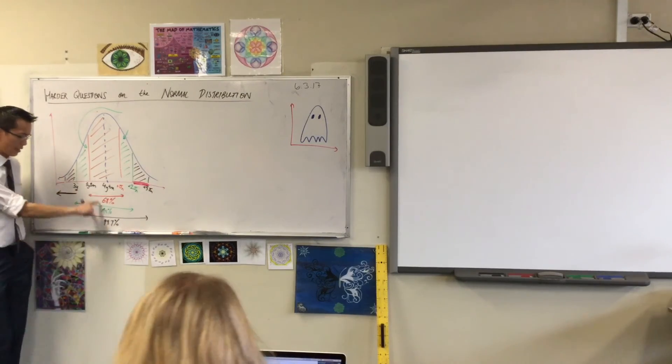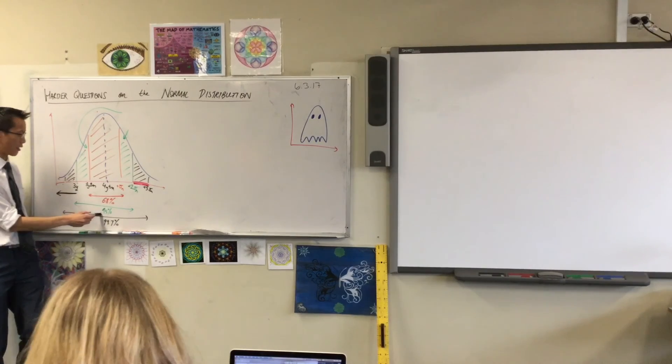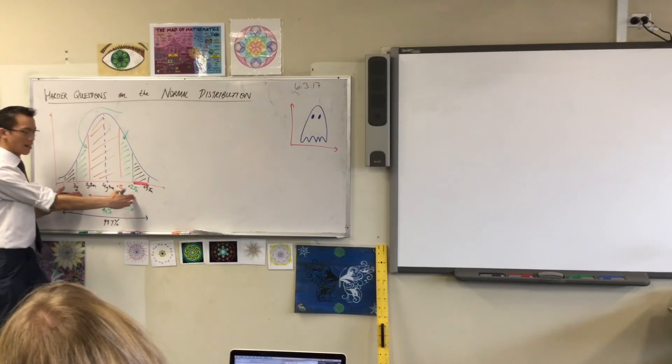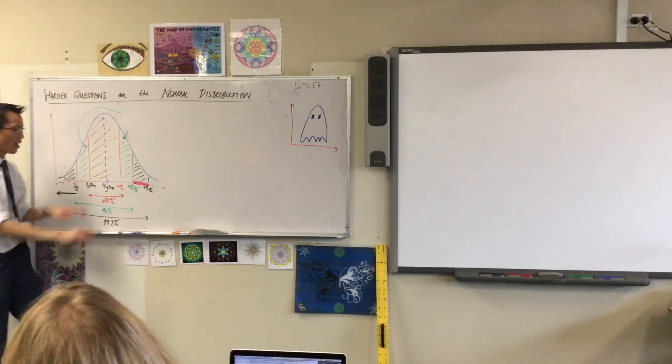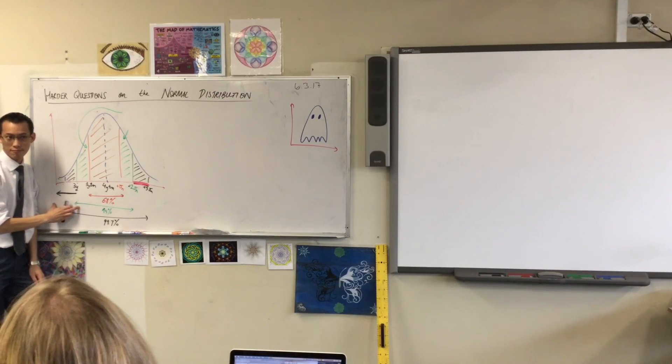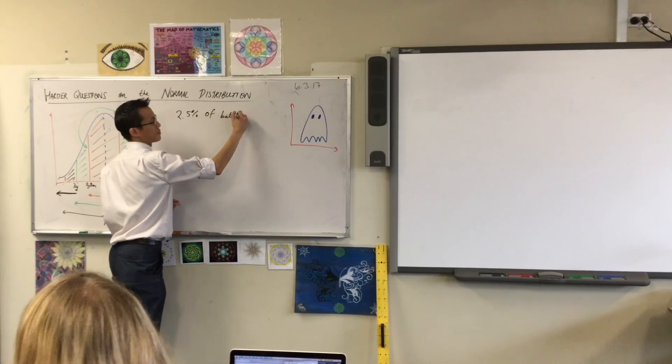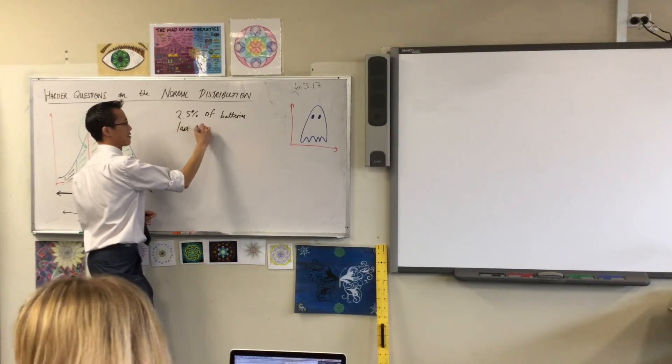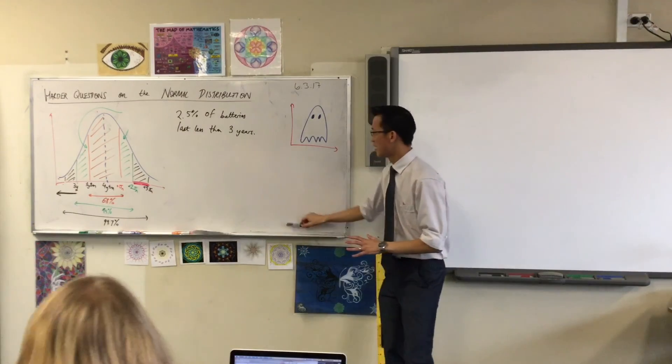Within two standard deviations, is it 68, 95, or 99.7? It's this one, right? This is two standard deviations. So, if this is 95, what's on the outside? What is not included within the 95 must be 5. That's the difference. But 5's on both sides. So, therefore, since I only want this half, it's 2.5. So, 2.5% of batteries last less than 3 years. So, this is my answer now.